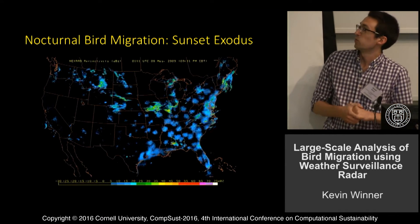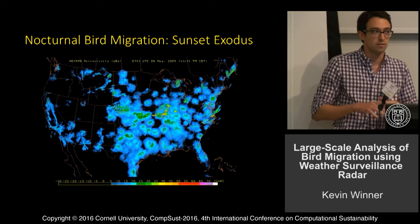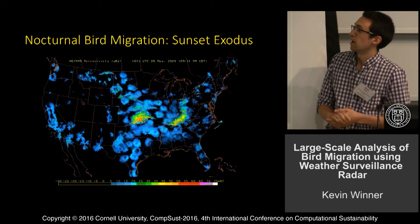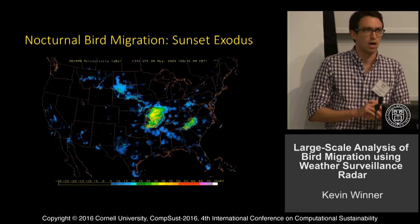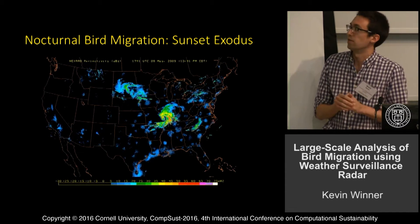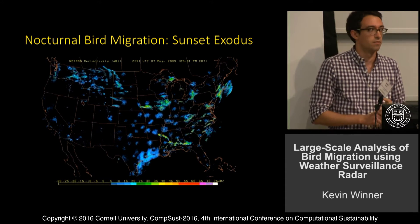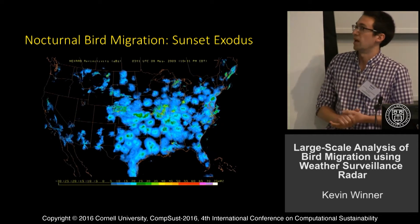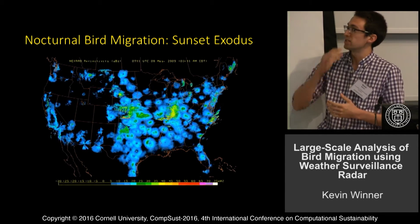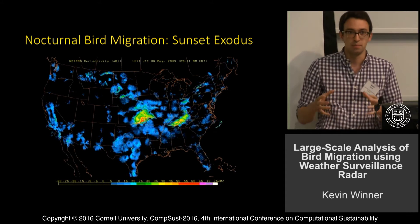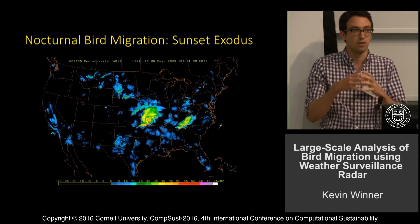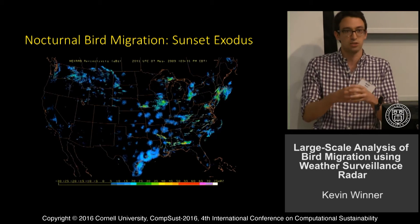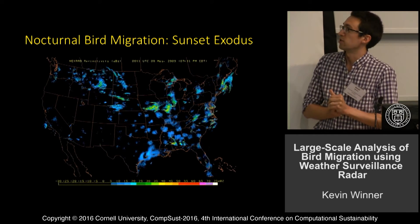This weather radar is actually an incredibly information-rich data set that's now been available. We have like 20 to 30 years of historical records of weather radar data available now. It's been used in a lot of different studies in the past, but mostly only on very small-scale studies of like a single species in a single site somewhere around the country.